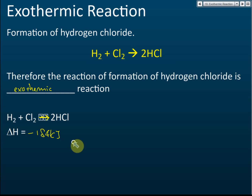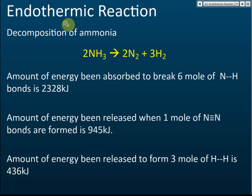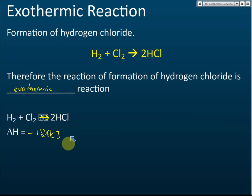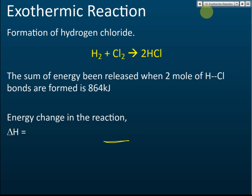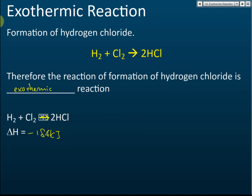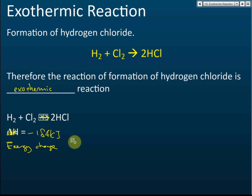Note: we should write 'energy change' rather than delta H here. If we use delta H, we must express the value in kilojoules per mole. For this calculation, just write energy change = −184 kJ; no need to write kilojoules per mole.